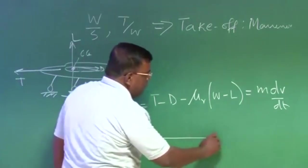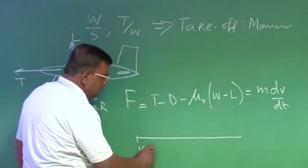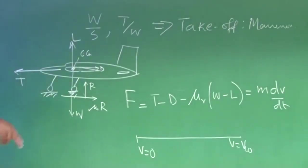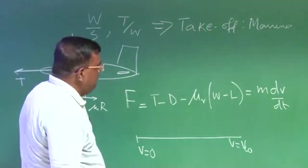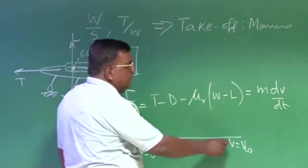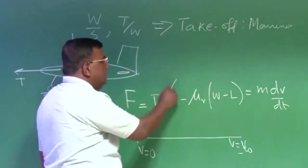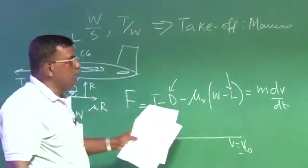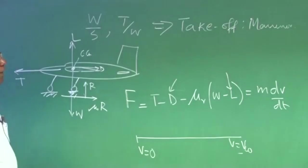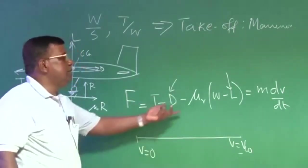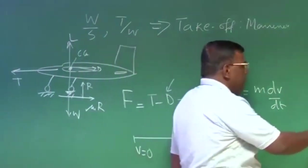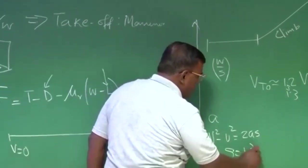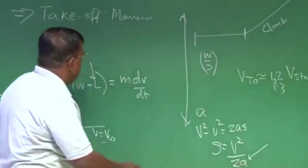For our case, if I have this sort of a diagram, then I can easily write F equal to T minus D minus mu_R into W minus L, and that is equal to M dV by dT. What is this F? The net force acting, that is thrust minus drag, then there will be frictional force mu_R into R, and R is nothing but W minus L. So this is straightforward, we have done in performance course.